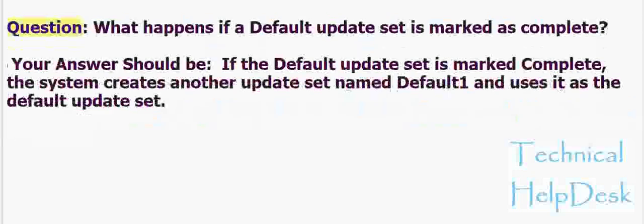Question: What happens if a default update set is marked as complete? Your answer should be: If the default update set is marked complete, the system creates another update set named Default1 and uses it as the default update set.